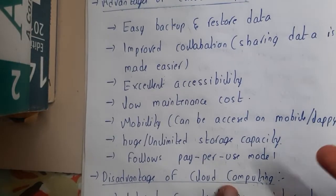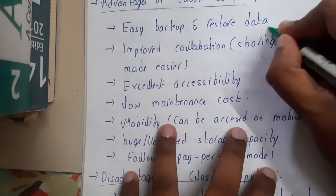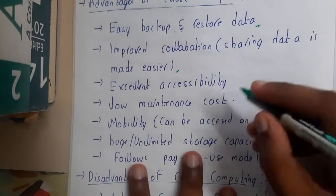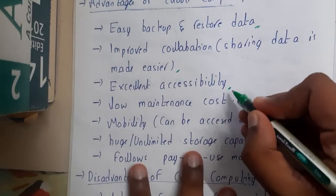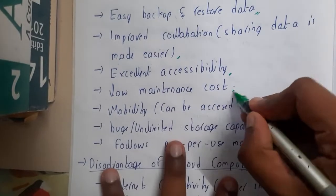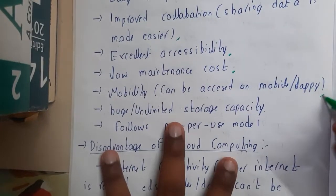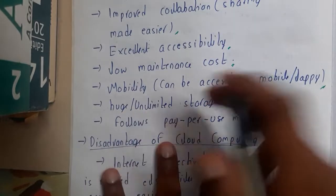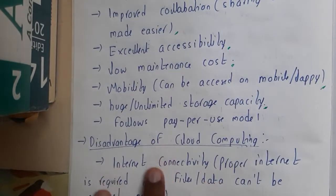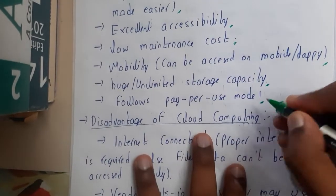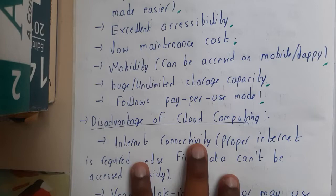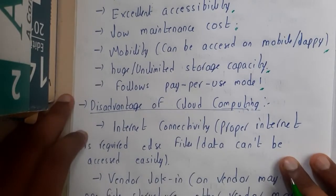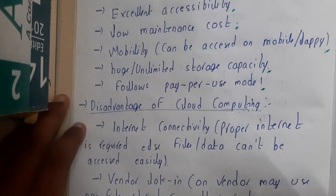So basically, the characteristics are also the advantages. To summarize the advantages: easy backup and restore of data, improving collaboration, excellent accessibility, low maintenance cost, easy mobility, huge storage capacity, and the pay-per-use model. So everything seems like an advantage — but are there any disadvantages?